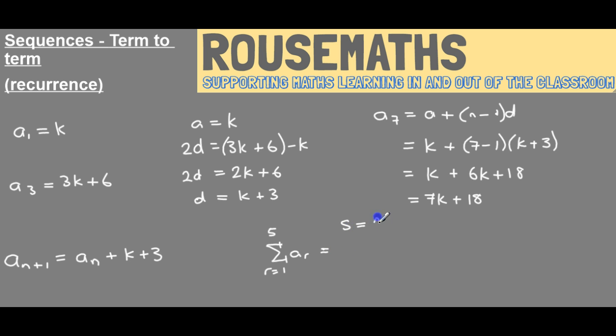which is n over 2 times 2a plus n minus 1 lots of the difference. So if we plug our relevant numbers in, we're dealing with five terms, so n will be 5. The first term was k, and the difference is k plus 3, which we found out moments ago by taking the first term away from the third term and halving that.